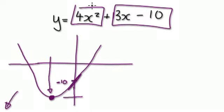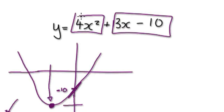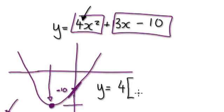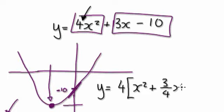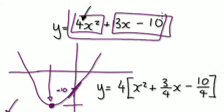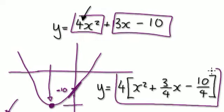To do this, we've got to do what's called completing the square. We only want the coefficient of x squared to be 1, so rewrite this by taking 4 out as a factor. So y equals 4 times square bracket, and then this will be x squared plus 3 over 4 x, and then minus 10 over 4. What we're saying is that this thing here is exactly the same as this, but just written differently.